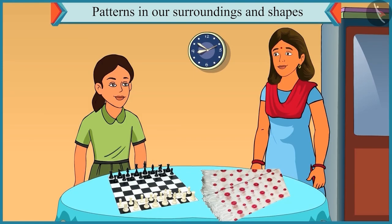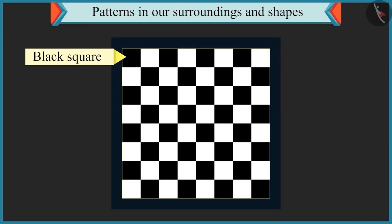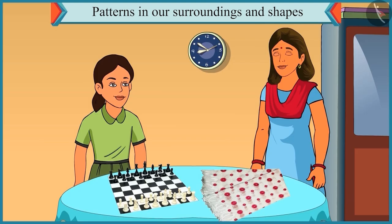Now, look at this. A pattern of one black square and then one white square followed by a black square is repeated in a chess board. Oh, yes. You are right.